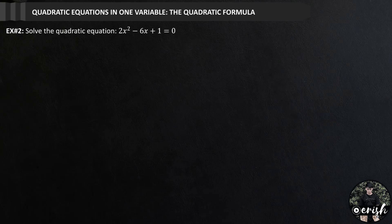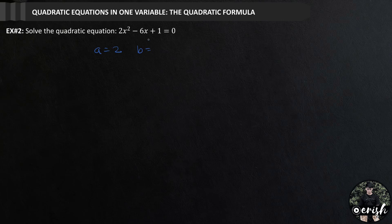Example number 2: solve the quadratic equation 2x squared minus 6x plus 1. The given equation is already in the general form, so we will just identify the values for a, b, and c. For a, we have positive 2; for b, we have negative 6; and for c, we have positive 1.